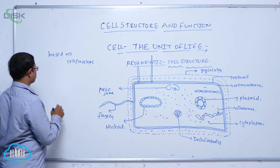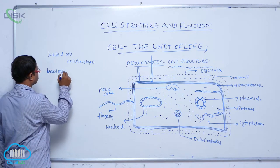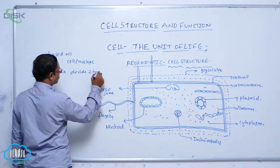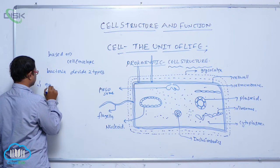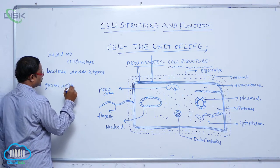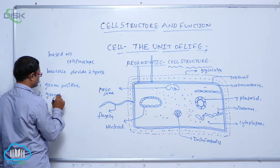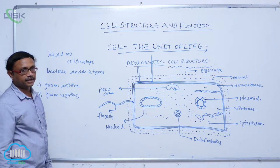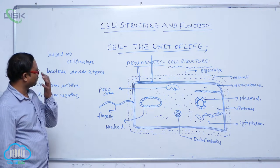Bacteria are divided into two types. The first one is gram positive and the second one is gram negative. This classification is based on the gram staining method.